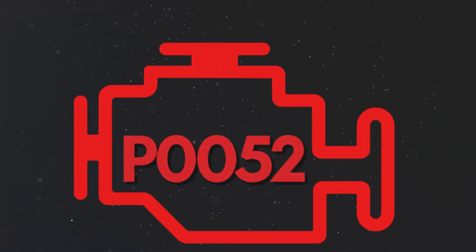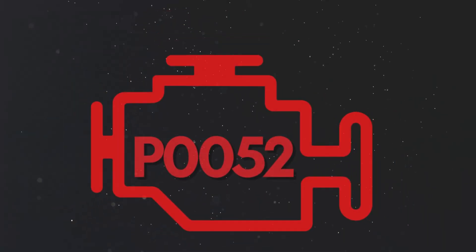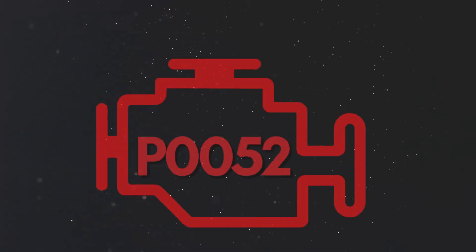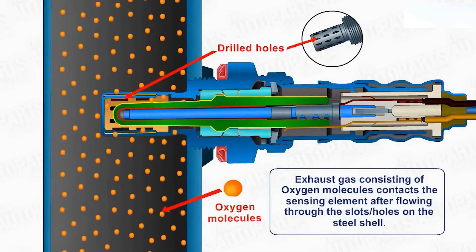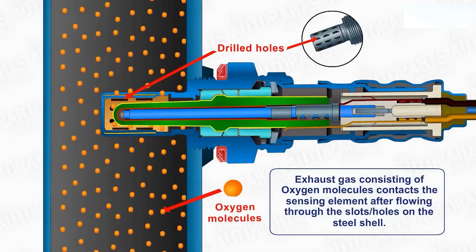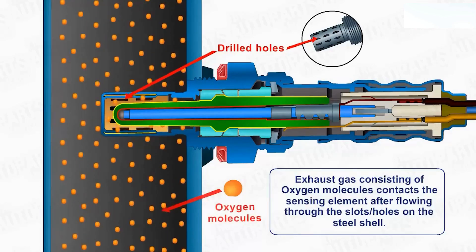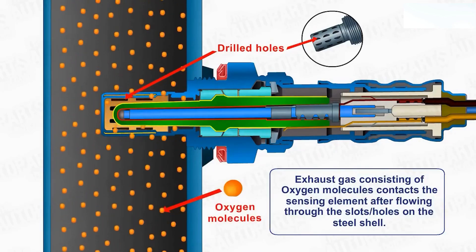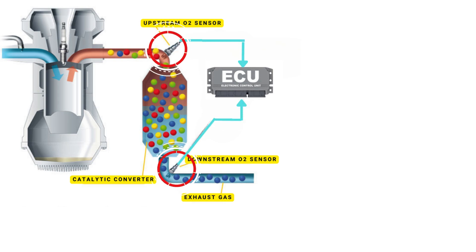Now let's learn why P0052 was triggered. Your vehicle's oxygen sensor plays a vital role in monitoring the oxygen content in the exhaust gases. It sends this data to the ECU, which then uses it to maintain the optimal air-fuel ratio.